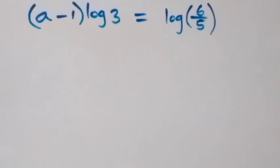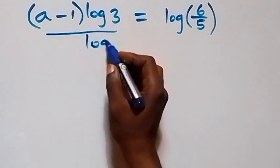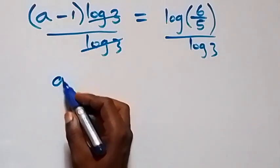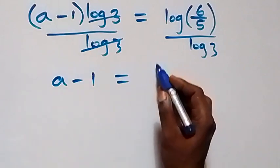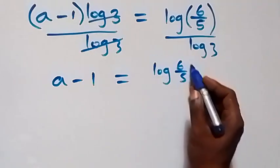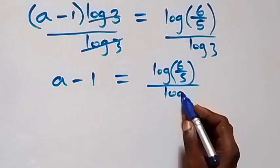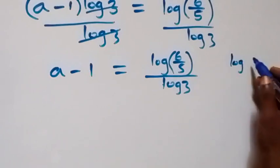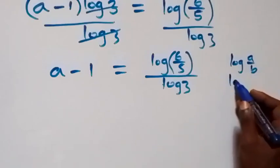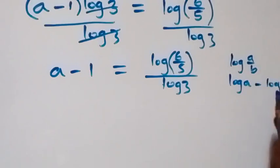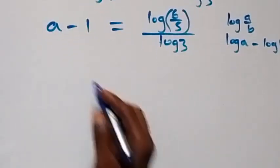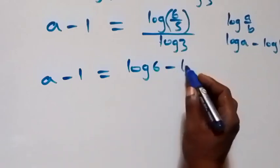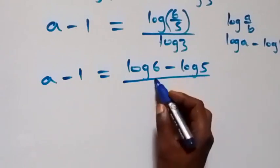Then, next step from here, we divide both sides by log 3. So log 3 cancels, and we are left with a minus 1 equals log(6/5) over log 3. Then, from the right-hand side, we apply the log quotient rule: log(a/b) is the same as log a minus log b. So what we have becomes a minus 1 equals log 6 minus log 5, all over log 3.